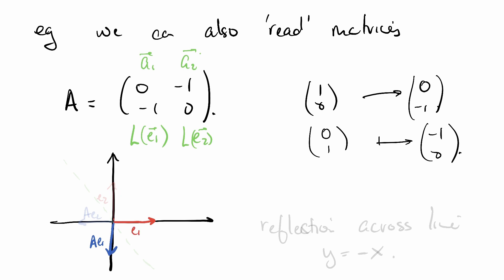This looks an awful lot like reflection through this line. This linear transformation is reflection across the line y equals negative x.